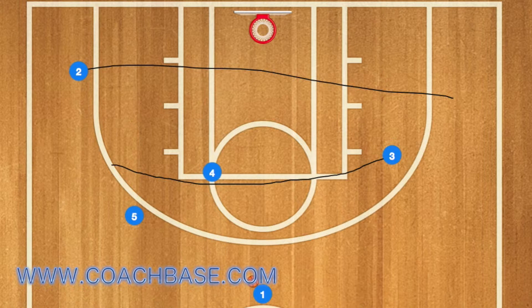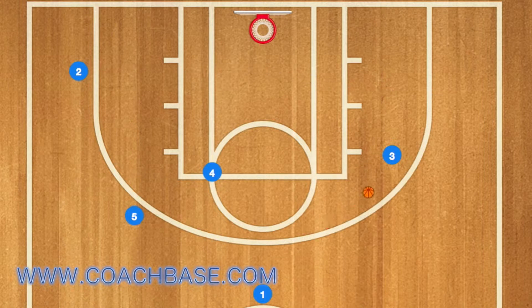Three will use four as a screen and pop out to the right wing, while two runs from the right wing to the left wing, and one will pass three the basketball.